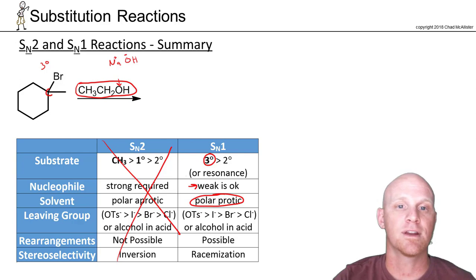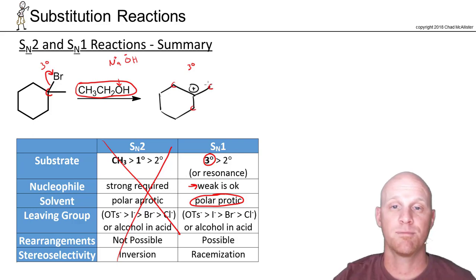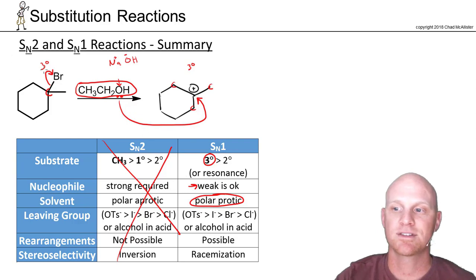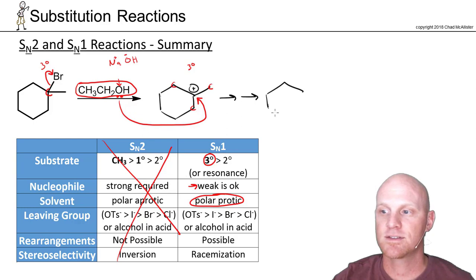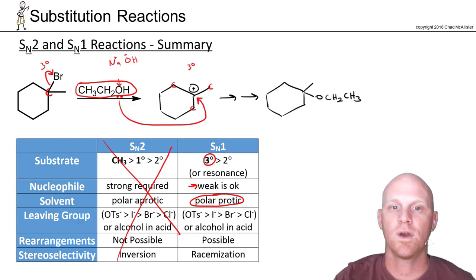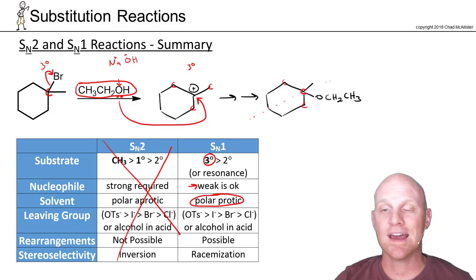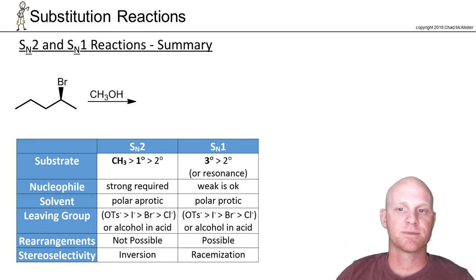The weak nucleophile is totally okay for SN1. Ethanol also has an OH bond so it's protic — polar protic — and everything lines up for SN1. When doing SN1 I recommend drawing out the carbocation intermediate to check for rearrangements. Our carbocation forms on a tertiary carbon and all three adjacent carbons would not be better, so no rearrangement takes place. The ethanol attaches there — skipping the proton transfer step — so we end up with an OCH2CH3 group, attached through the oxygen. No chiral center forms here, so we get a single achiral product.